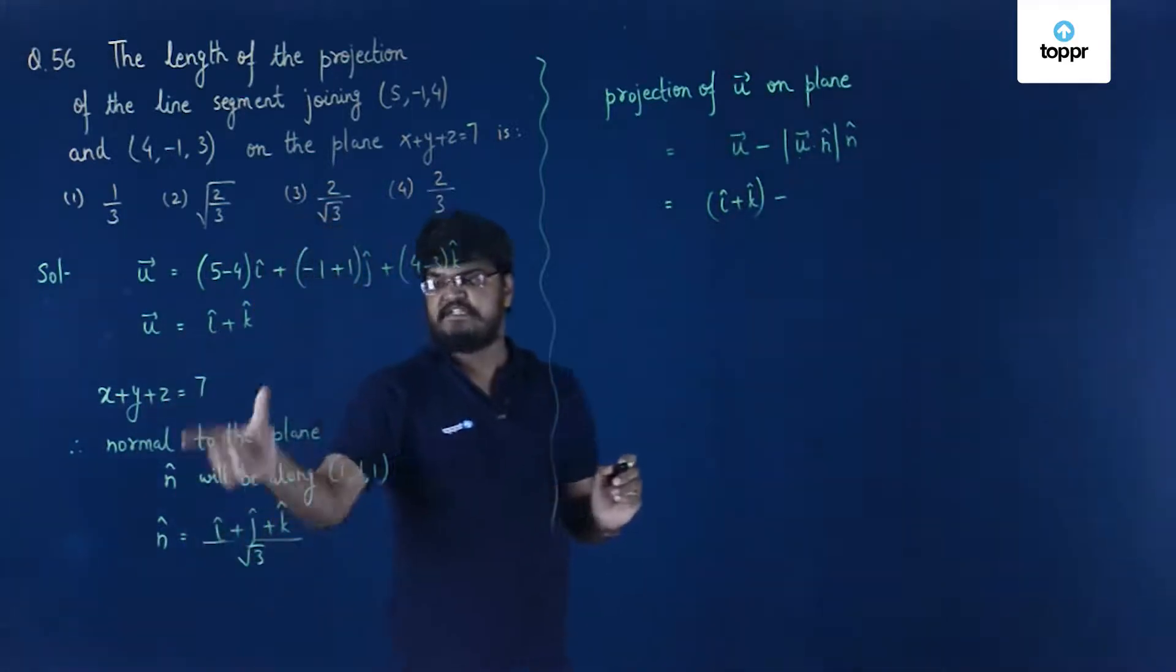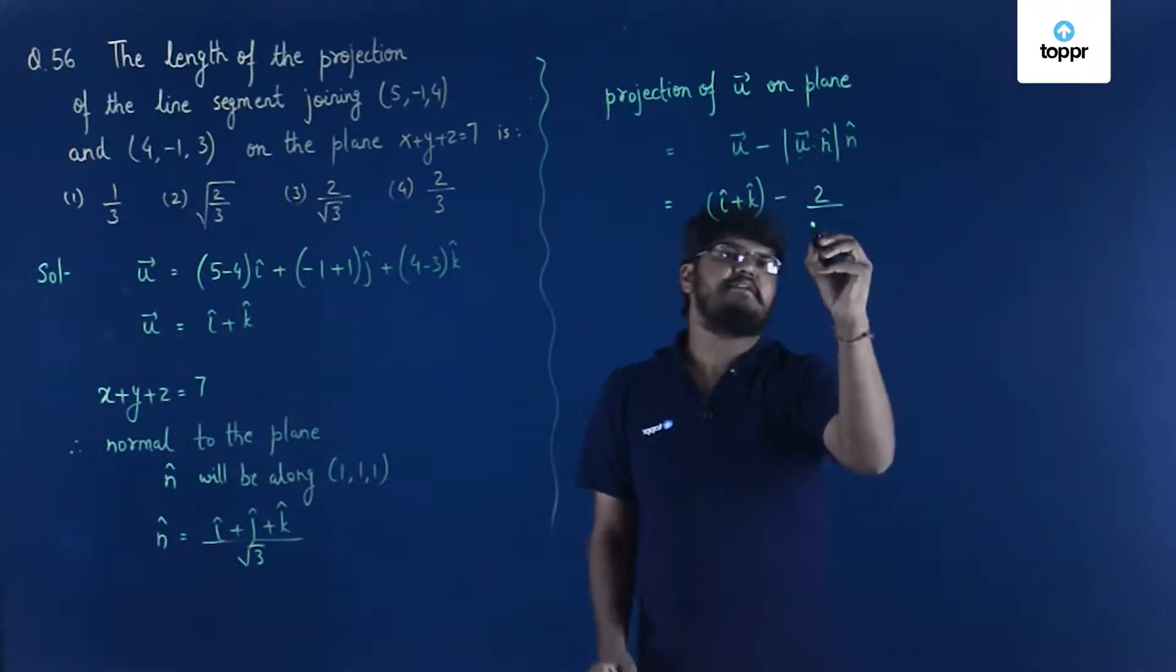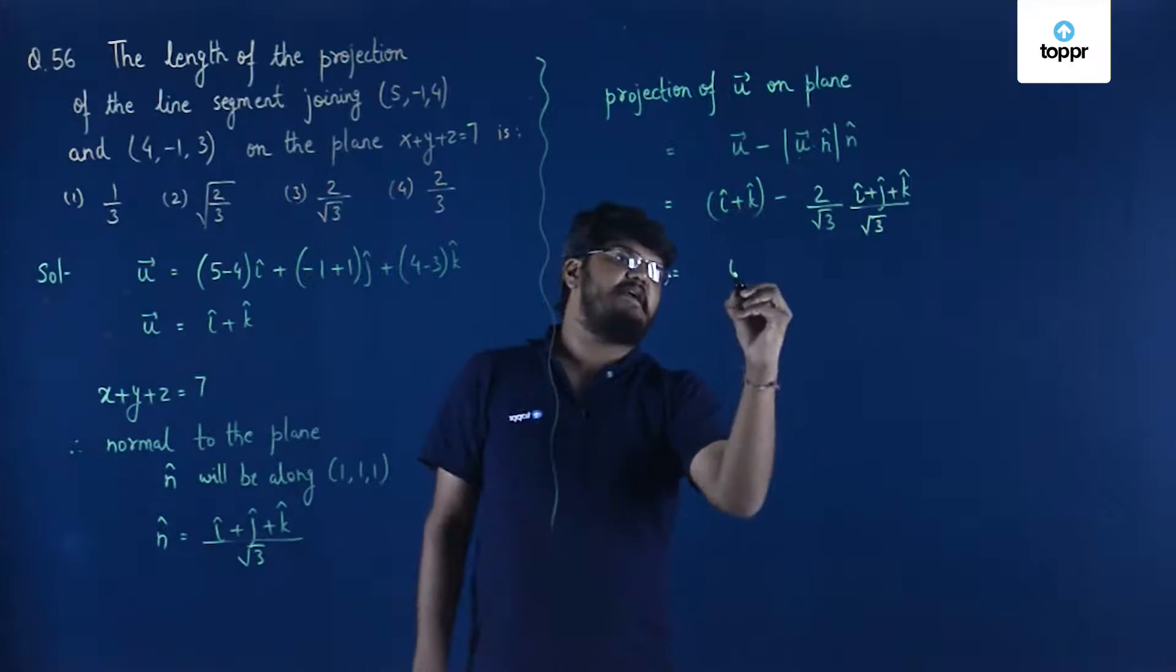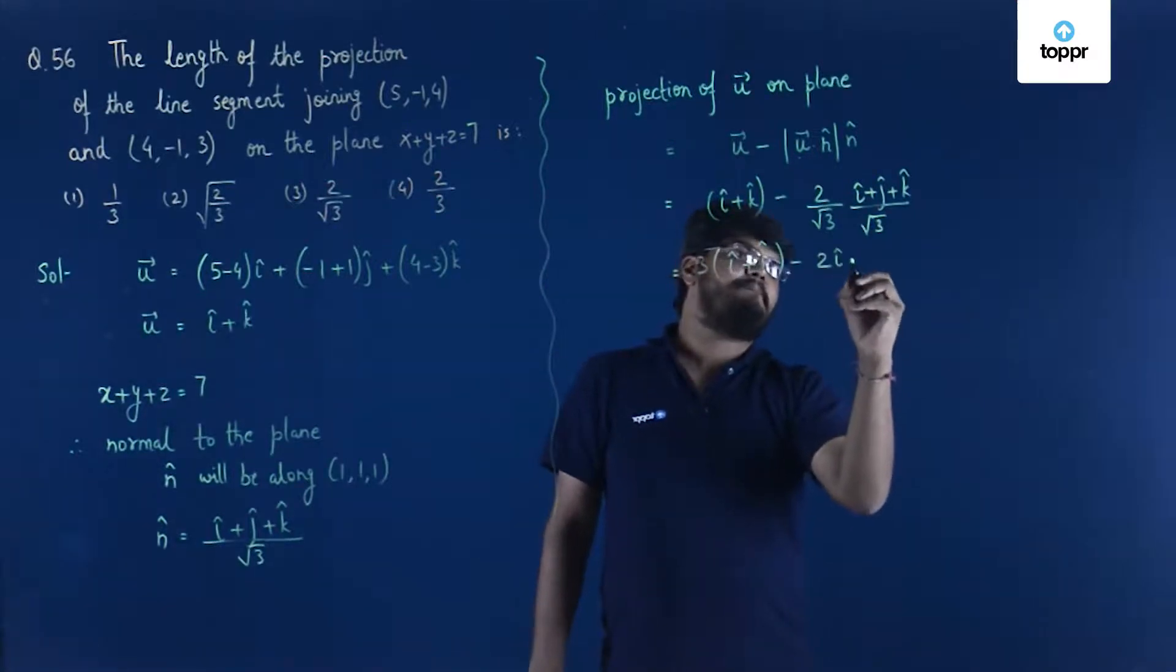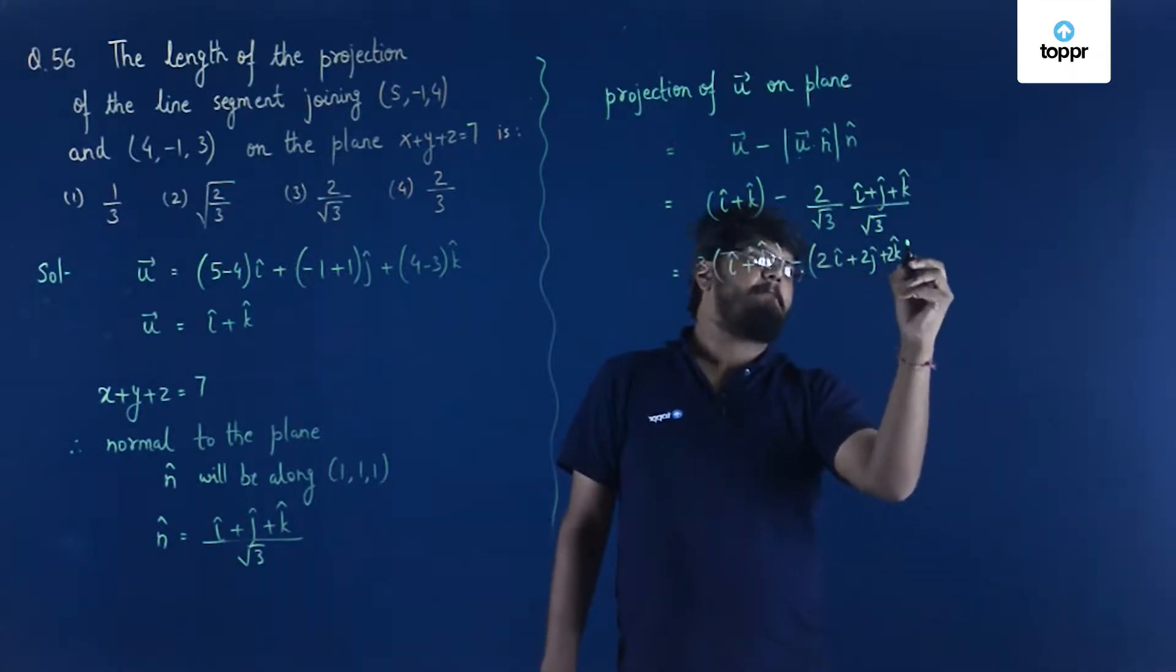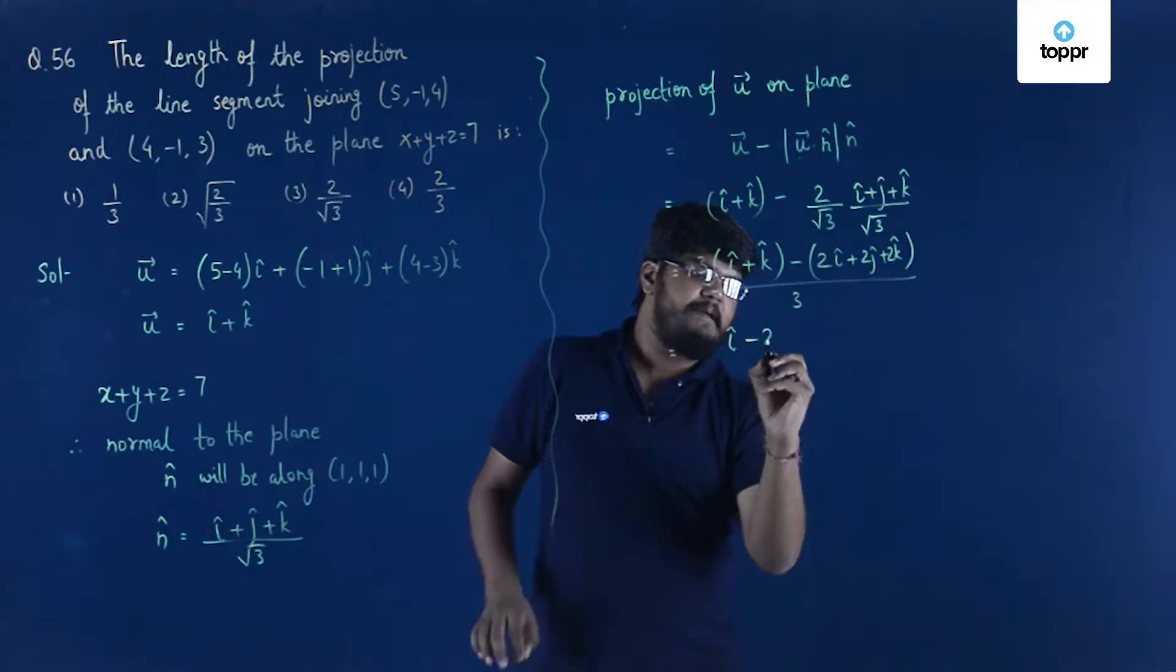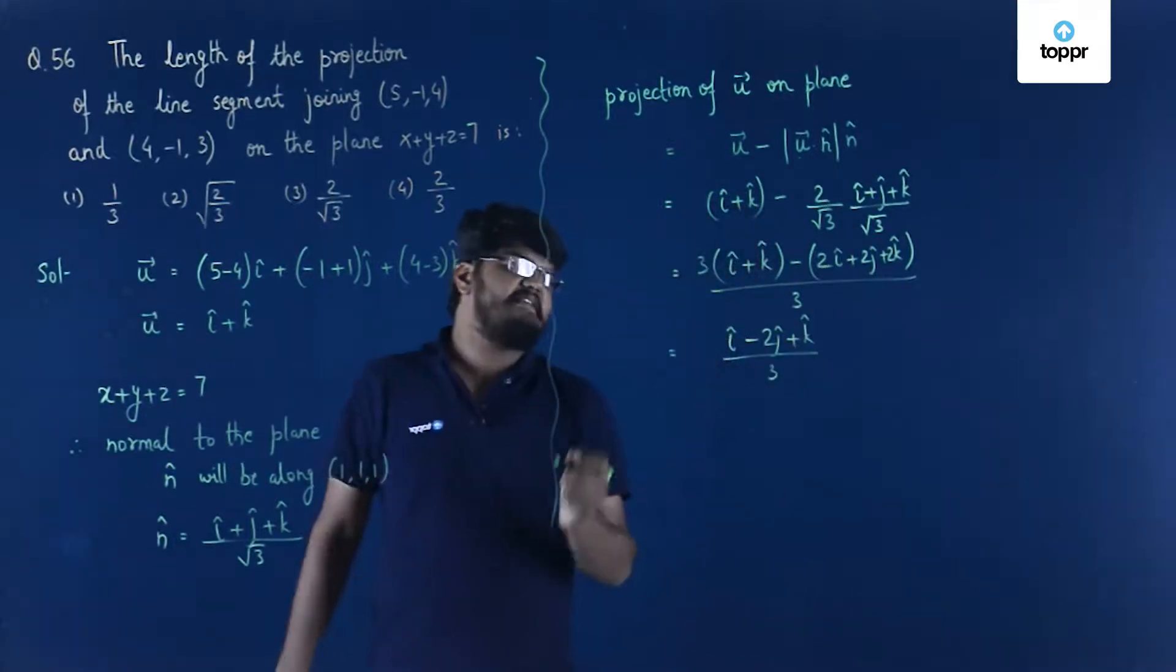Divided by √3, into (i cap + j cap + k cap) / √3 again. So now this basically has become (i cap + k cap) · 3 minus 2(i cap + j cap + k cap), all divided by 3. This will make it (3i cap - 2i cap) = i cap. There's no j cap here, so minus 2j cap, and (3k cap - 2k cap) = k cap, divided by 3. So this basically is the projection.